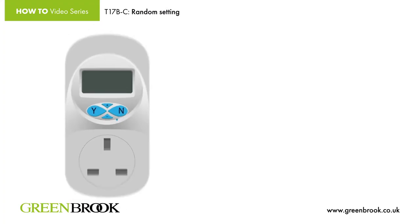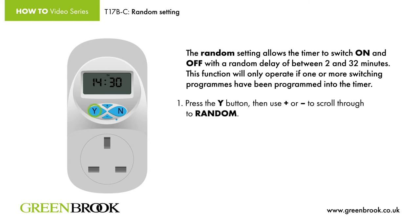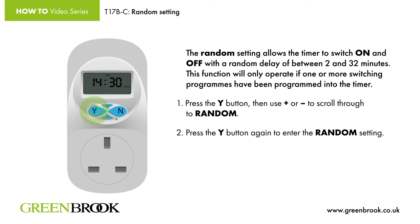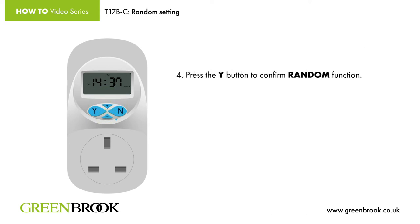Random setting. The random setting allows the timer to switch on and off with a random delay of between 2 and 32 minutes. This function will only operate if one or more switching programs have been programmed into the timer. Step 1: Press the Y button, then use plus or minus to scroll through to random. Step 2: Press the Y button again to enter the random setting. Step 3: Pressing the plus or minus button will toggle the random icon on and off. Step 4: Press the Y button to confirm the random function.